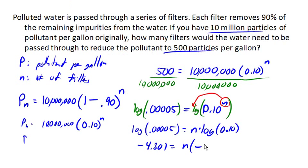So now we can divide by negative 1. And we end up with N equals 4.301, because our negatives cancel here, filters. Now, of course, we can't really have 0.3 filters. So if we wanted to reduce the pollutant below 500 particles per gallon, we'll really need five filters.